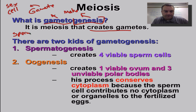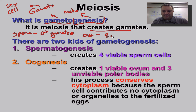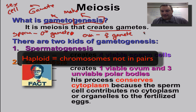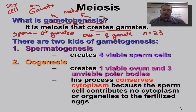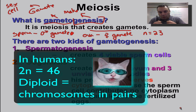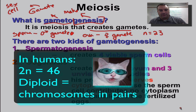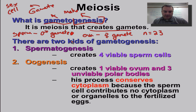You have a sperm cell, which is the male gamete — the reproductive cell made by men. And then you have the egg cell, or ovum, which is the female gamete, produced by women. In humans, both of these are haploid, and the haploid number is 23. So when a sperm cell joins with an egg cell, you have 23 plus 23 equals 46. All other cells in your body are diploid, with 46 chromosomes — 23 from mom and 23 from dad.